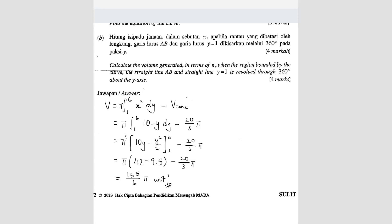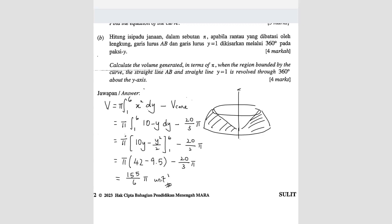Basically, we find the volume of the entire region bounded by the curve, then minus the volume of the cone, to get the required region. I hope you all understand, and that's how you solve this.